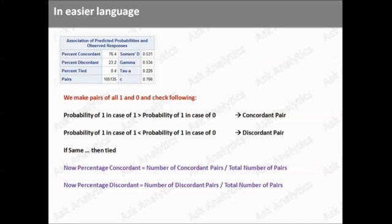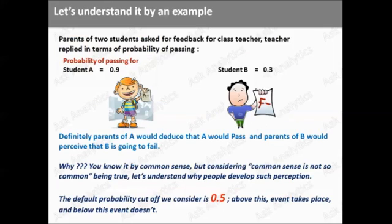You must have seen this too. Now, let's say there are two students in a school. Student A and student B. Suppose their parents went to school and asked for their feedback from their class teacher. Now, class teacher replied in terms of their probability of passing. Class teacher said, the probability of passing for student A is 0.9 and that of student B is 0.3.